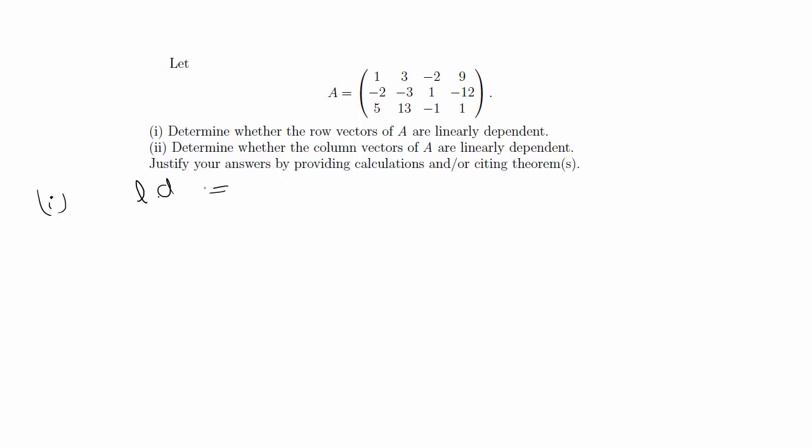So there's linear dependence of rows if and only if the rank of the matrix A is less than the number of rows of A when A is in row echelon form. So the rank is the number of rows in row echelon form that are non-zero. So it says the same thing as what I just said.